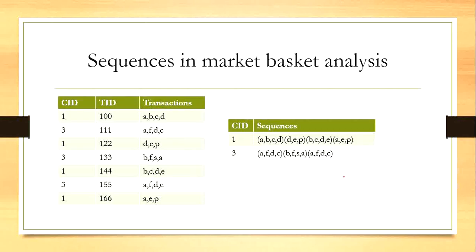So here the transaction database is represented as a sequence database for customer one and for customer three. And these are the transactions. So in market basket analysis we can call a set of transactions as a sequence.